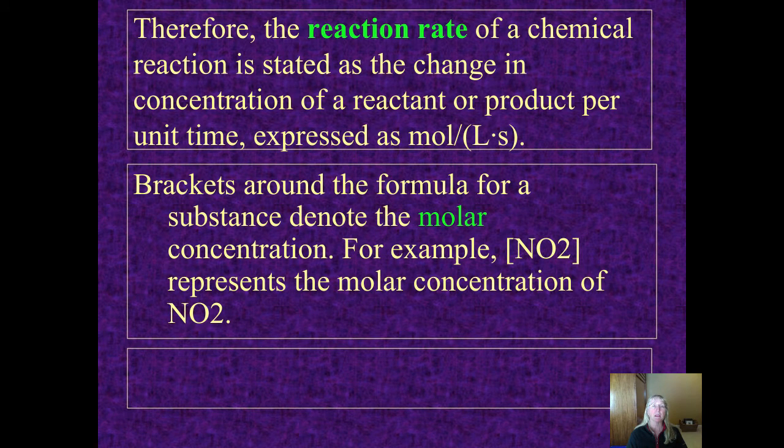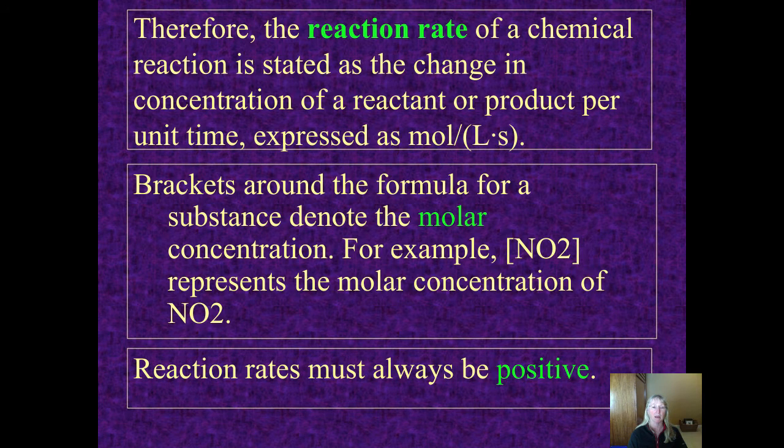The reaction rate is stated as the change in concentration of either a reactant or product expressed per some unit of time, such as molarity (moles over liters) per second. When we want to express the concentration of a reactant or product, we often put brackets around it. So if you see something that looks like this with brackets, that means the molarity of nitrogen dioxide, or the molar concentration of it. Reaction rates must always be positive, but for our purposes, we'll stay positive.